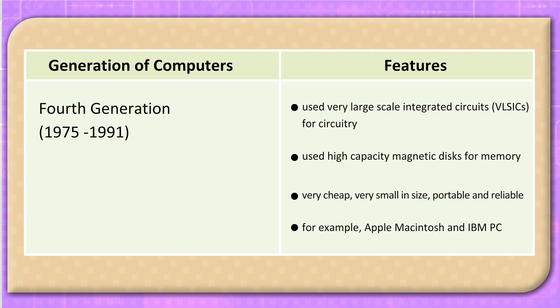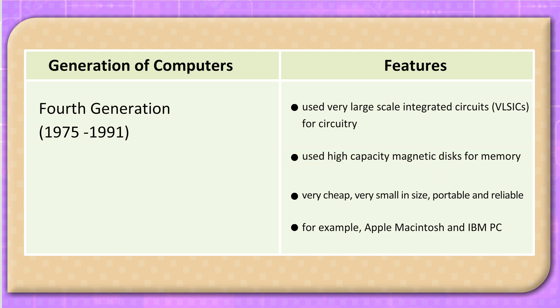Fourth Generation, 1975–1991: Used Very Large Scale Integrated Circuits (VLSI) for circuitry. Used high-capacity magnetic discs for memory. These computers were very cheap, very small in size, portable, and reliable. Examples include Apple Macintosh and IBM PC.